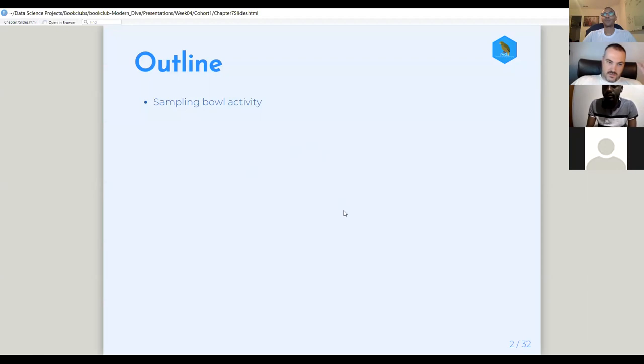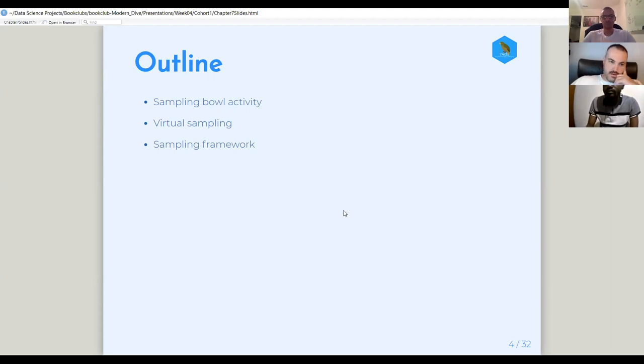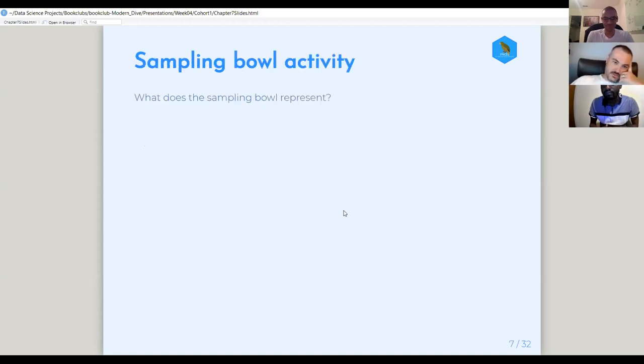All right. So the outline for the chapter: we're going to talk about the sampling bowl activity, which is their analogy for the sampling process. We're going to go over virtual sampling, which helps us take it from a concrete activity out in nature to something we can do on our machine. And then we'll talk about the sampling framework. I kind of left off in the framework, so we can go over the rest of the definitions when we get to that part. But the sampling framework is a consistent way of thinking about sampling. And then there's a case study. To be honest with you, Pavitra, I took advantage of not presenting this week and stopped preparing. But yeah, there's lots of good stuff in here. All right.